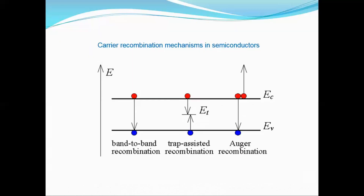The third recombination process is Auger recombination. An electron in the conduction band recombines with a hole in the valence band, and the energy given off is transferred to another electron in the conduction band. This is called Auger recombination. These are the carrier generation and carrier recombination mechanisms.